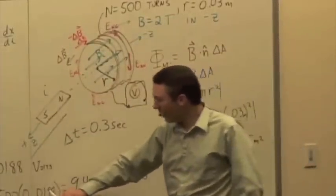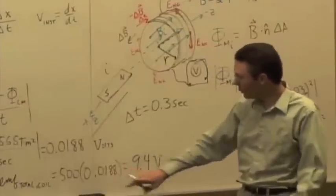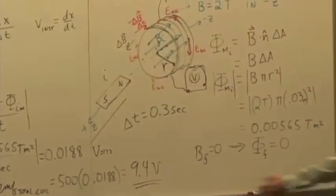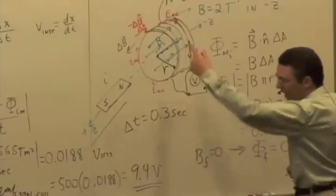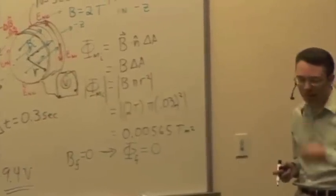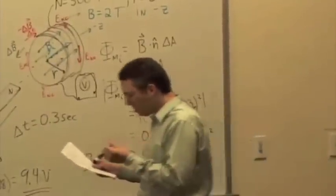So here you're getting something on the order of millivolts or hundreds of a volt. And you're multiplying that by 500 turns. They all add up, and you get a sizable voltage that you can measure.